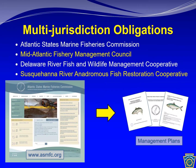Given their broad distribution within the Atlantic Ocean and their connection to inland waters, migratory fishes are collaboratively managed by state, federal, and private stakeholders through a formalized process. These include the Atlantic States Marine Fisheries Commission, the Mid-Atlantic Fishery Management Council, the Delaware River Fish and Wildlife Management Cooperative, and the Susquehanna River Anadromous Fish Restoration Cooperative.